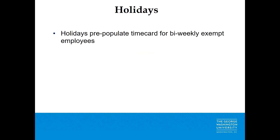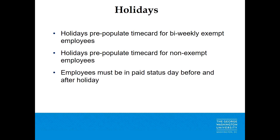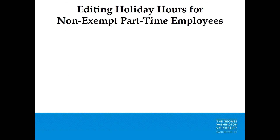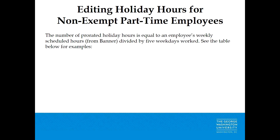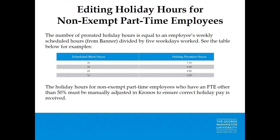Holidays: Holidays pre-populate the time card for both bi-weekly exempt and non-exempt employees. Employees must be in paid status the day before and after a holiday. Non-exempt part-time employees default in Kronos with four hours of holiday — timekeepers may need to adjust the holiday hours per FTE. The number of prorated holiday hours equals the employee's weekly scheduled hours from Banner divided by five weekdays. For example, a non-exempt part-time employee with 50% FTE must have holiday hours manually adjusted in Kronos to ensure correct holiday pay. If you have questions about an employee's FTE, contact the Benefits Office or email timeoff@gwu.edu.